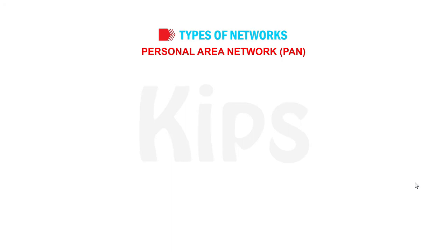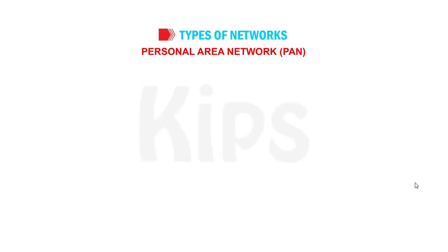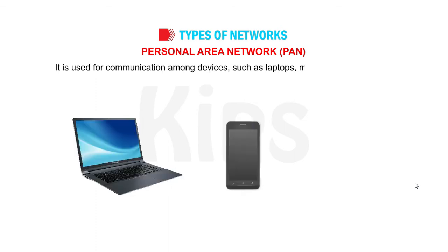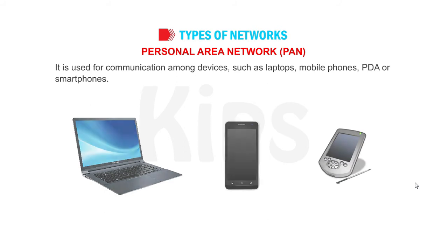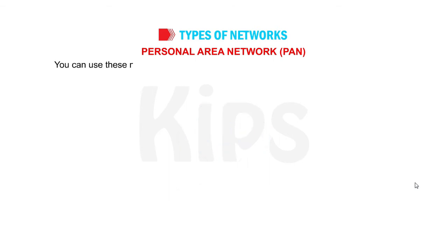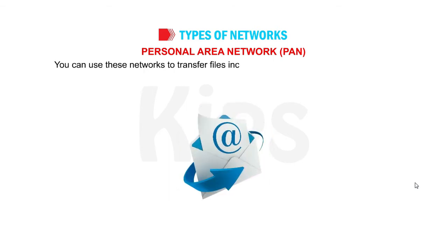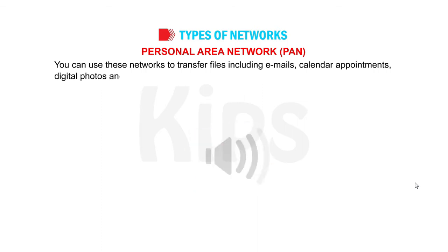Personal Area Network, PAN. PAN is a computer network that covers a small area of about 10 meters, about 30 feet. It is used for communication among devices such as laptops, mobile phones, PDA or smartphones. Personal Area Networks can either be wired or wireless. You can use these networks to transfer files including emails, calendar appointments, digital photos and music.